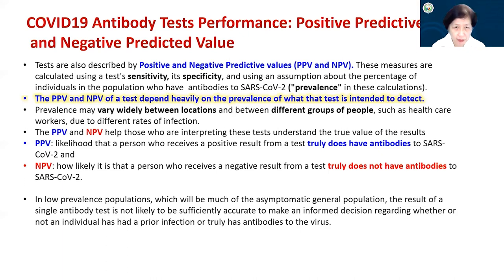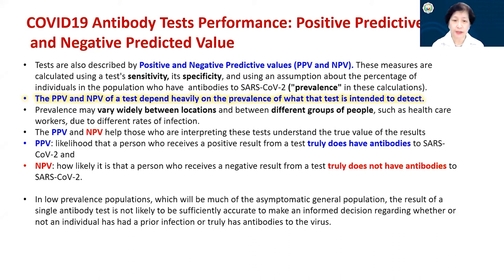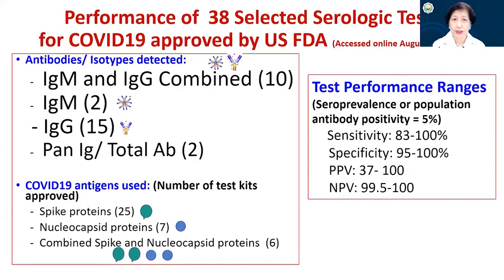The positive predictive value is the likelihood that a person who receives a positive result truly does have antibodies to SARS-CoV-2. The negative predictive value is the likelihood that a person who receives a negative result truly does not have antibodies to SARS-CoV-2. In low prevalence populations — such as the general asymptomatic population — the result of a single antibody test is not likely to be sufficiently accurate to make an informed decision regarding whether an individual has had a prior infection.